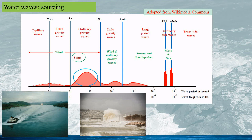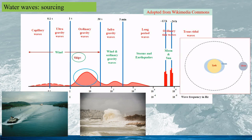Longer waves with periods of minutes to tens of minutes are those generated by typhoons and earthquakes. Longer waves with a period of about 12 or 24 hours are also called tides, caused by the relative motion between the Earth and the Moon and between the Earth and the Sun. The gravitation between the Earth and the Moon causes tides at a period of about 12 hours — tides twice a day — called semi-diurnal tides, or 24 hours, the diurnal tides.